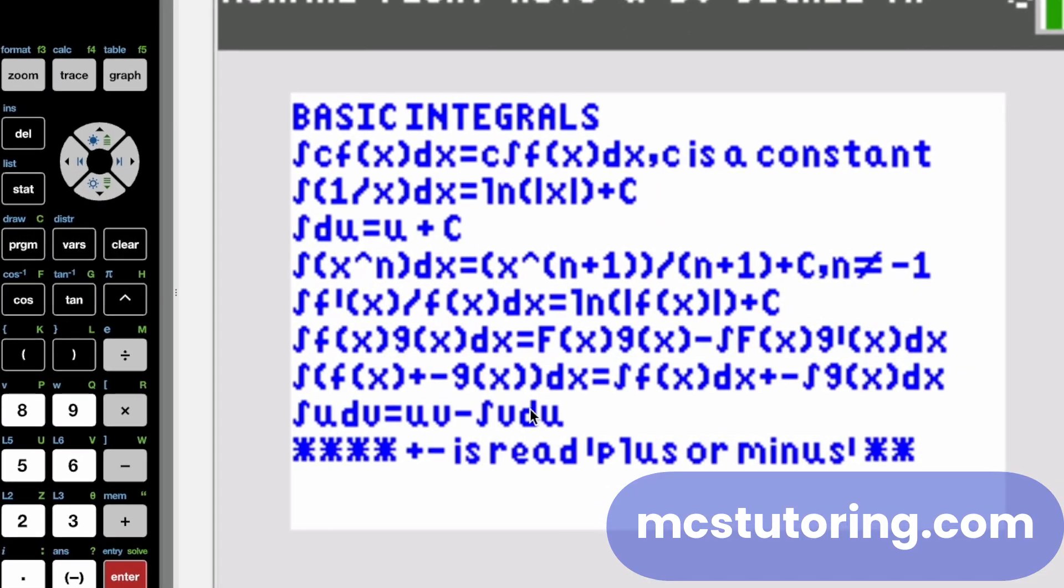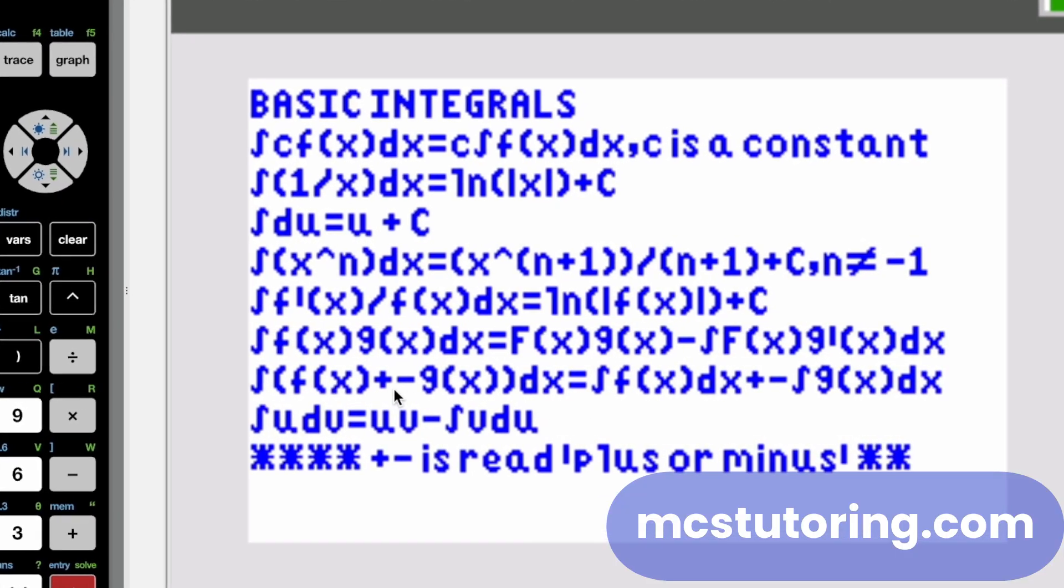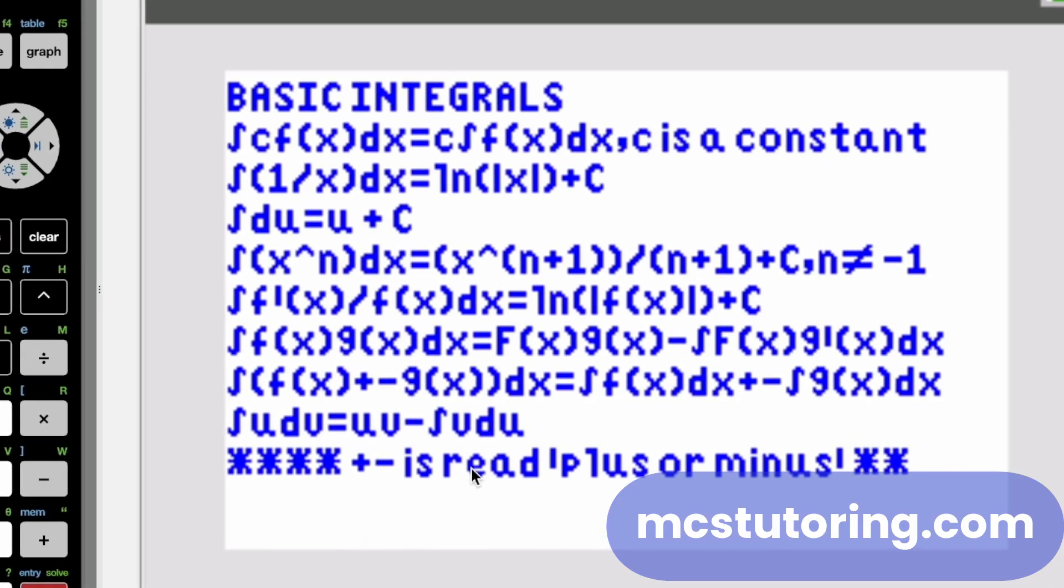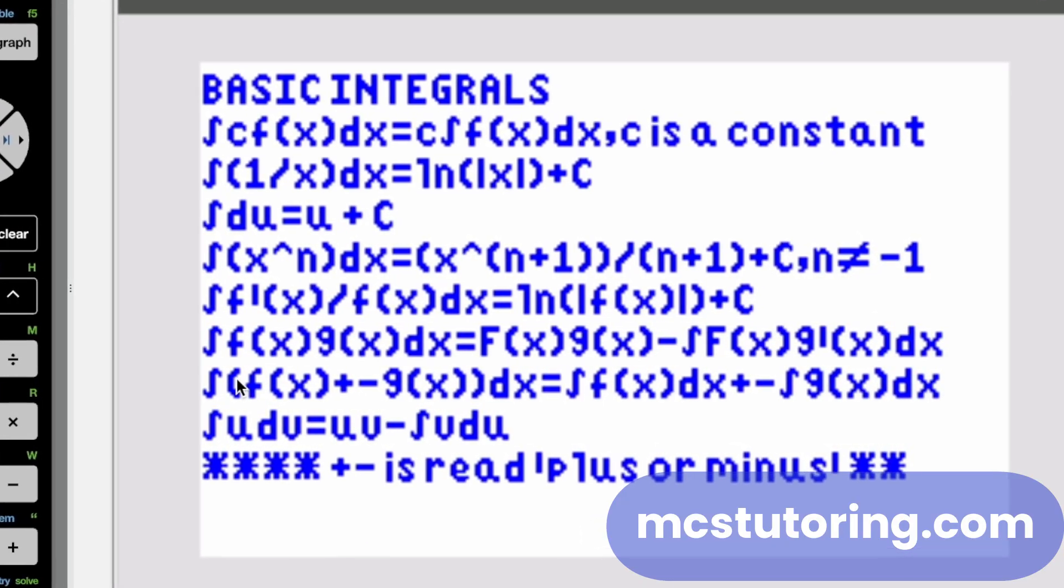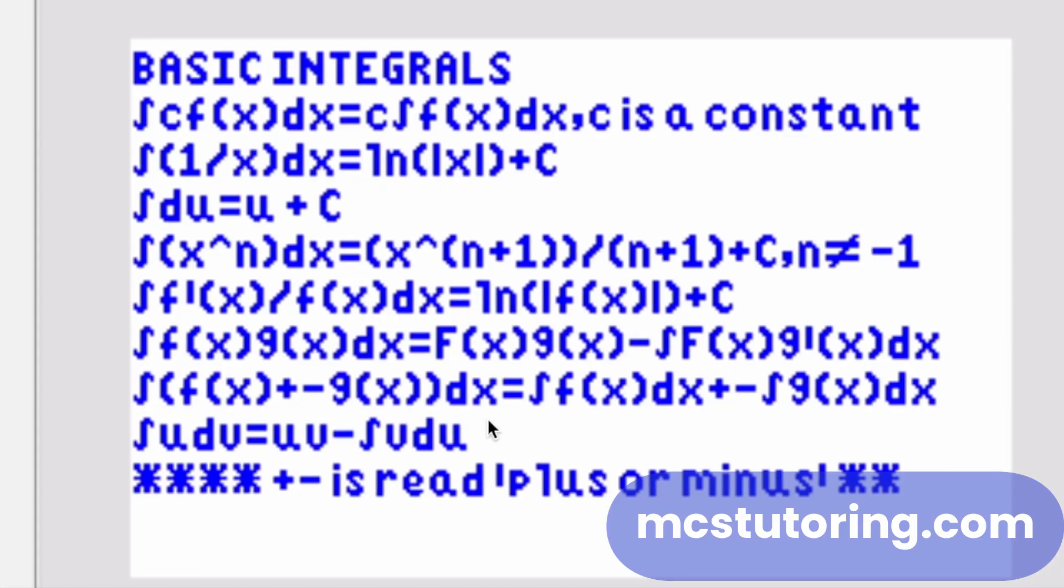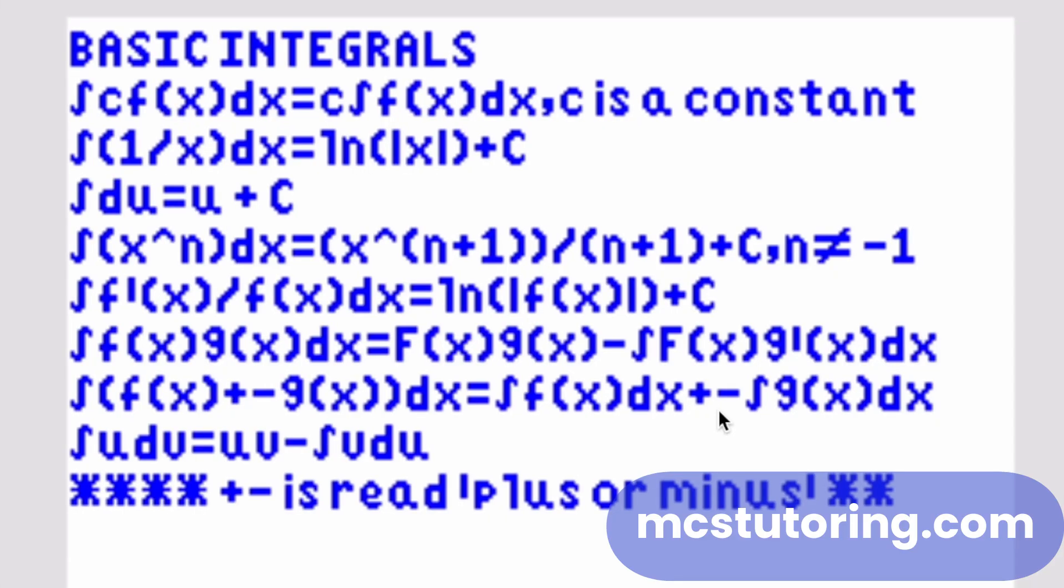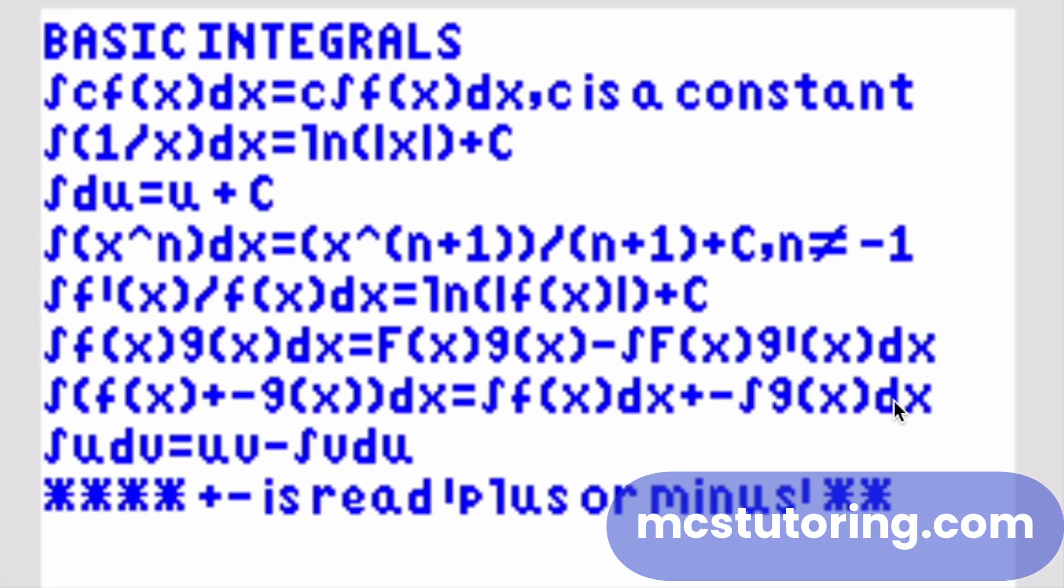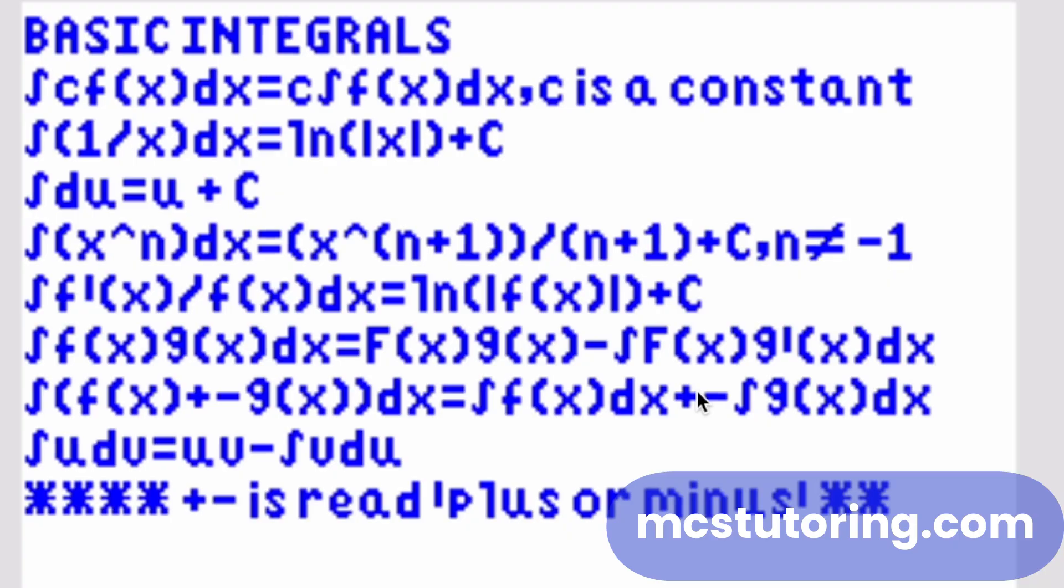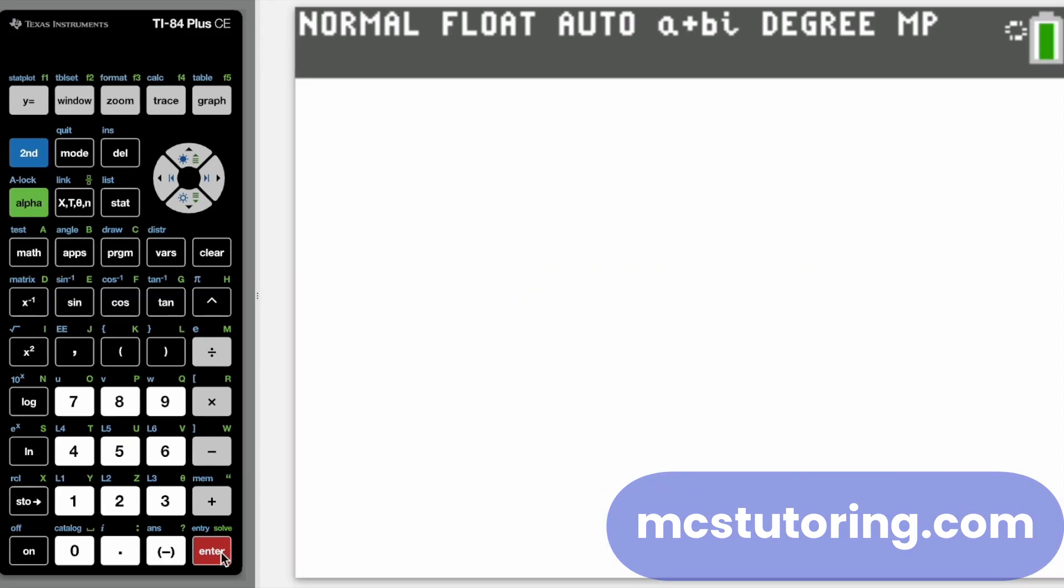Cool thing here. Got integration by parts. And then I do this plus or minus thing right here. This means this plus minus is read plus or minus. So it's the integral of F of X plus or minus G of X DX is integral of F of X DX plus or minus integral of G of X DX. So if it's a plus here, it'll be a plus here. If it's a minus here, it's a minus here. Okay. Good. I just want to clear that up.